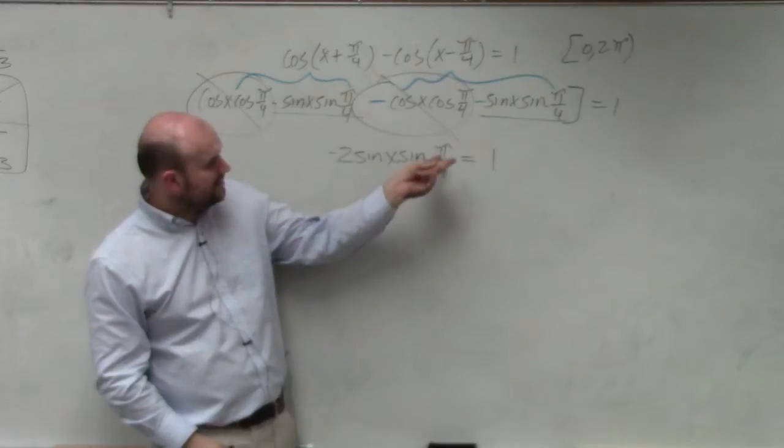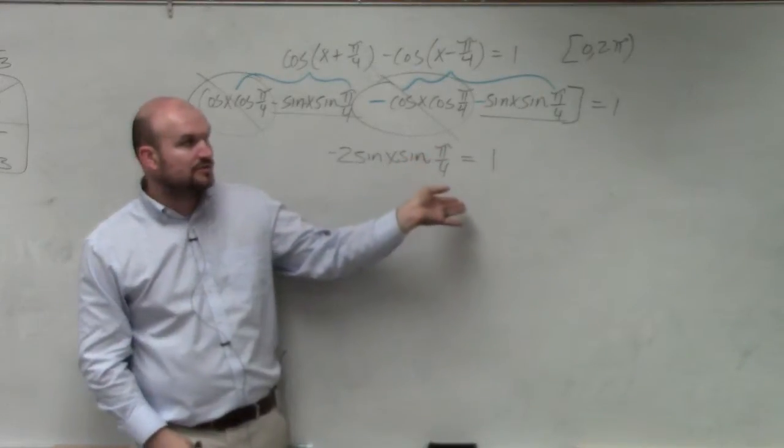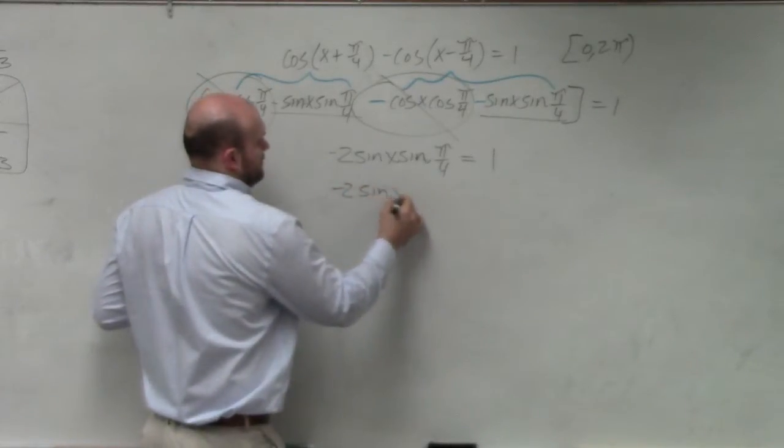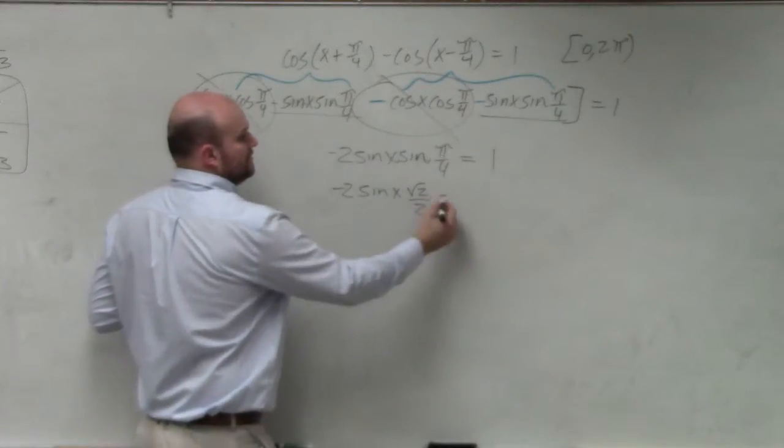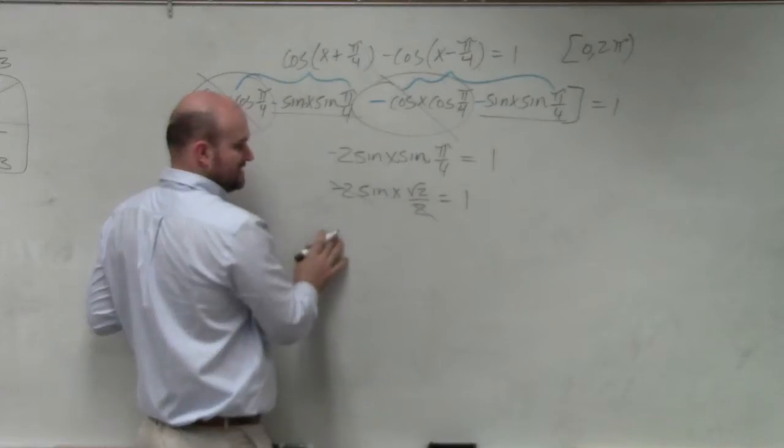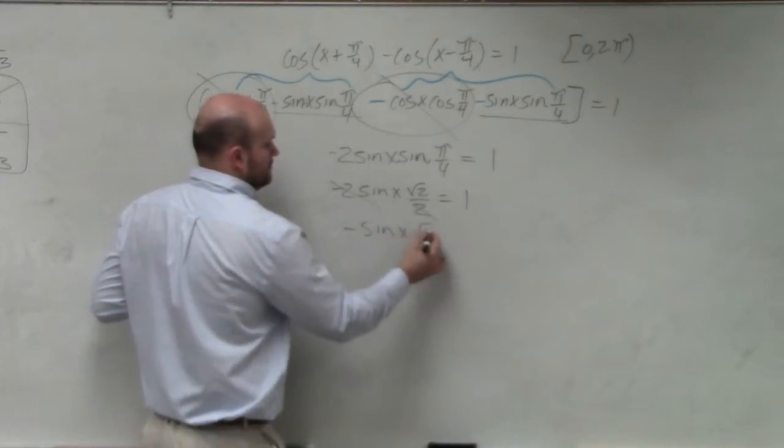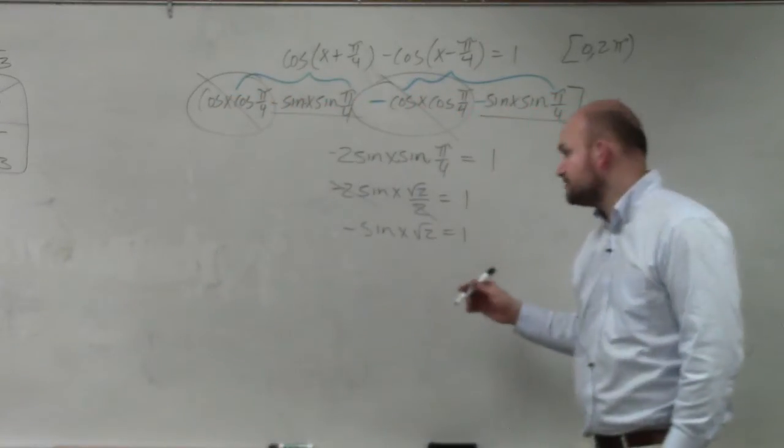Now, let's look at this. What is sine of pi over 4, which is square root of 2 over 2 equals 1. These negative 2 and 2, that divides to 1. Now, all I have to do is use my inverse operations.